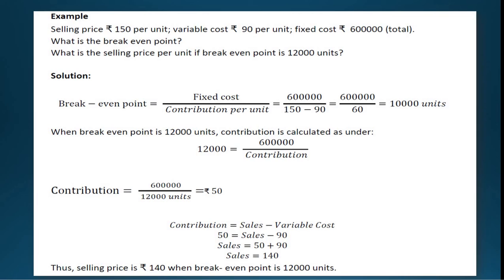For the second question: what is the selling price per unit if the break-even point is 12,000 units? In this case, the break-even point units are already given and we need to find the selling price. Using the formula BEP = Fixed Cost divided by Contribution, we substitute: 12,000 = 6 lakhs divided by Contribution. We don't know the contribution because contribution = Selling Price minus Variable Cost, and the selling price is what we need to find.